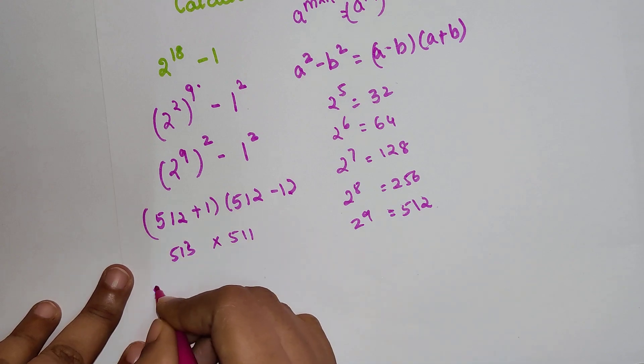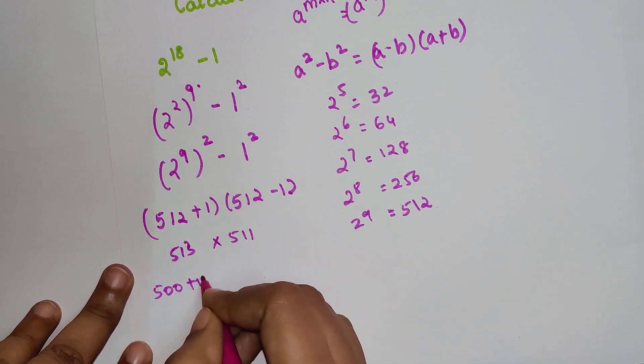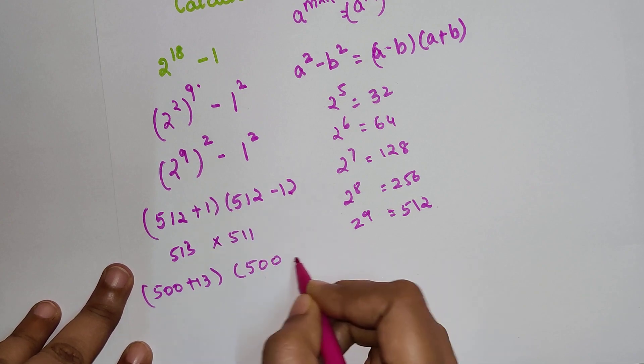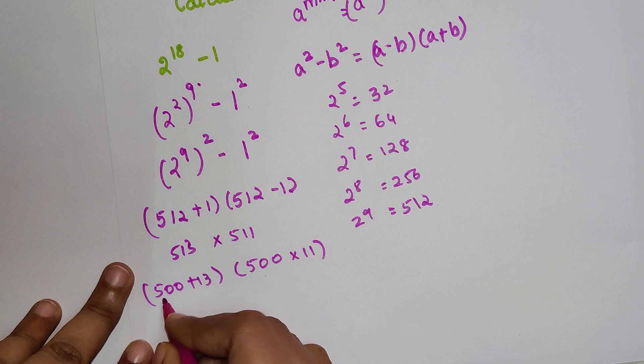So this can be written as 500+13. You can directly multiply this or I am just simplifying it further. It is easier that way.